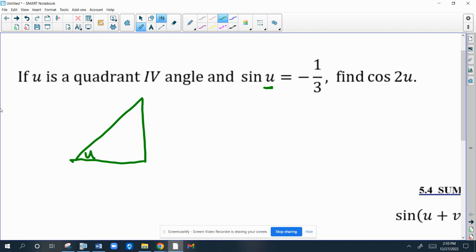It's quadrant 4. So Y is always negative, X is always positive. That's negative. The sine of U is opposite, negative 1 over hypotenuse. The side over here is 9 minus 1 with Pythagorean Theorem, or the square root of 8, or 2 root 2 if you want to write it like that.